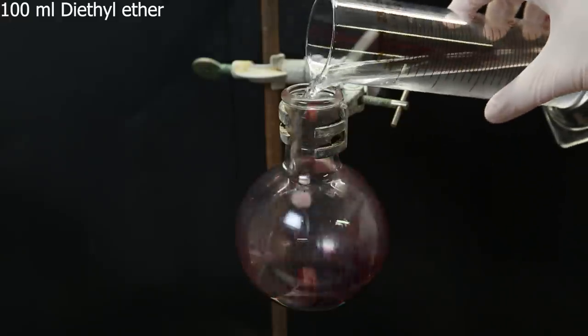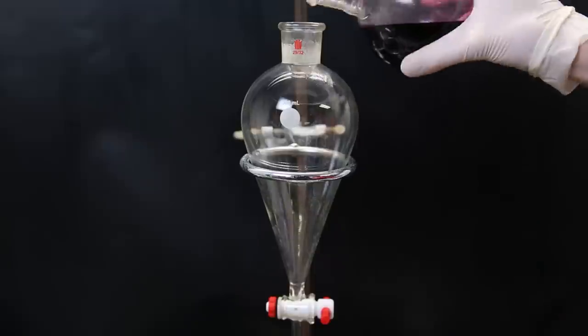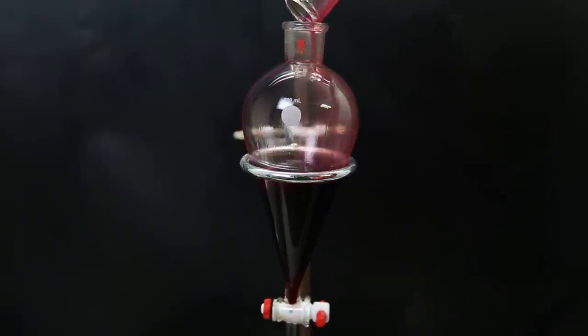Now this mixture still contains a lot of impurities, so I dissolve it again in 100 ml of diethyl ether. I move it back to the separatory funnel, and wash the flask once with some more ether.